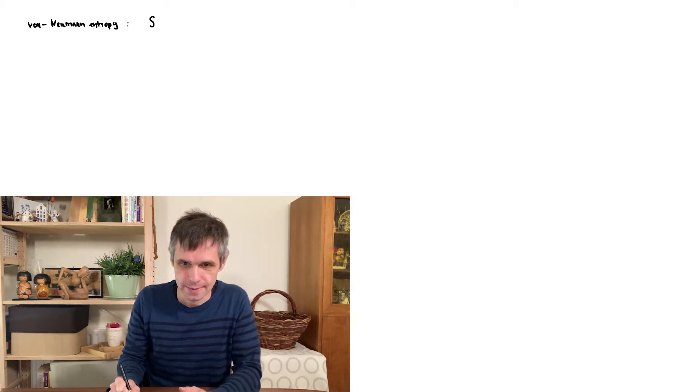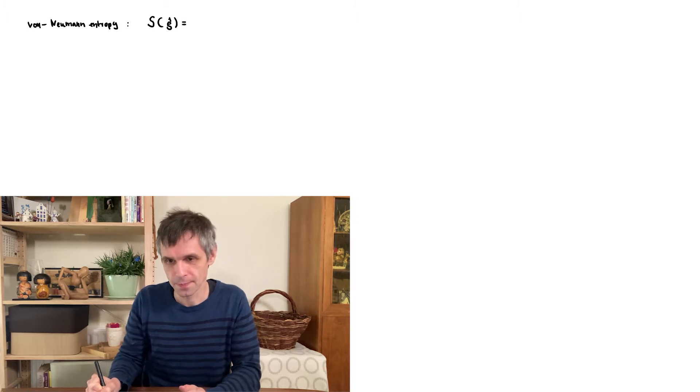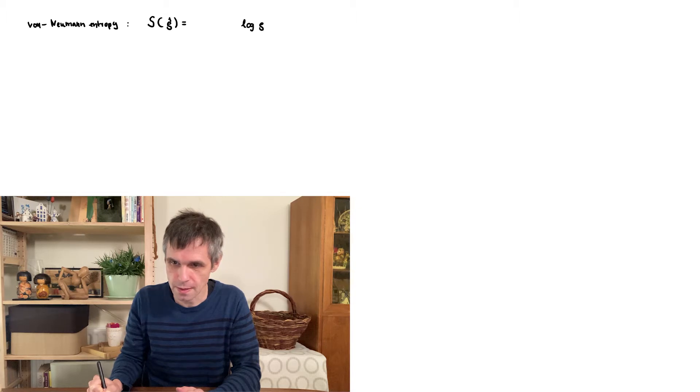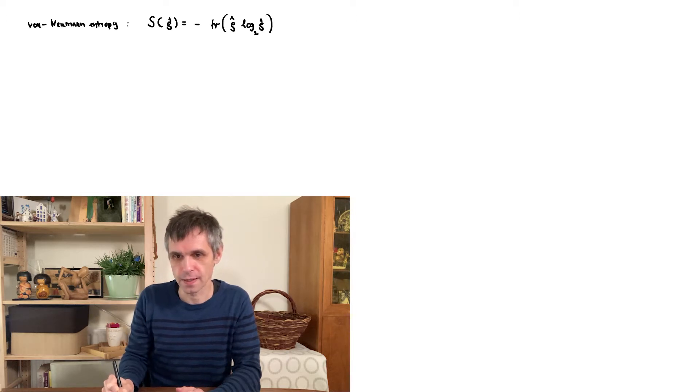I'm going to denote it again as S, and this now depends on the density matrix of the quantum system. And it is defined in the following way. It contains a logarithm of this density matrix, and we are going to take it base 2, and then we multiply this by the density matrix, and then we take the trace of this object, and finally there is a minus sign in front of this.